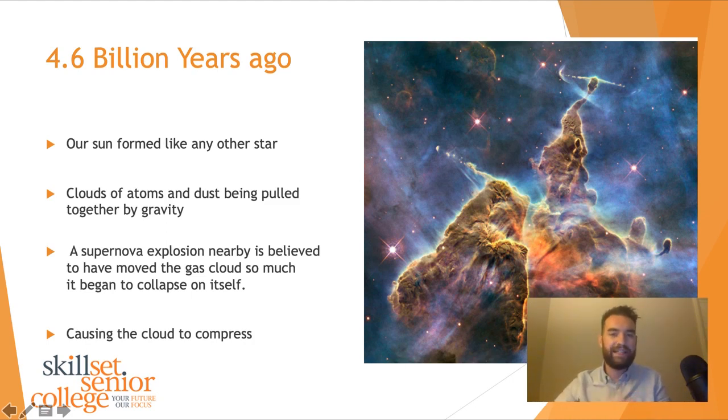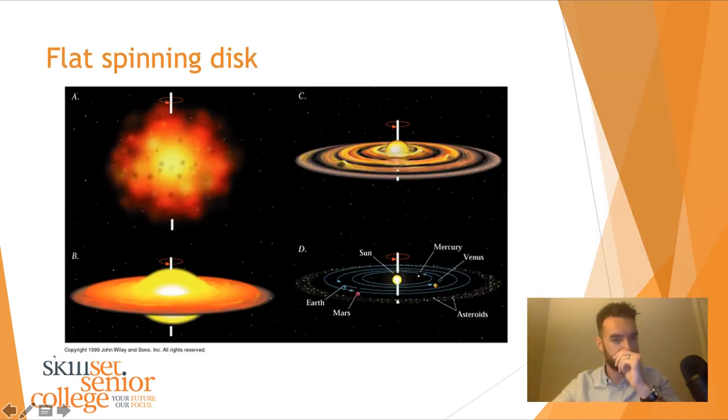This caused the cloud to compress. I talked about this spinning disk. It has a special name. If we look at this little diagram here, we have A, B, C and D. A is our dust clouds. We then get the supernova explosion, the compression of the cloud into B. You can see this proto sun forming in the middle. Then C, we do have the formation of our sun. But you can see the rings around the sun. We still have this flat spinning disk. These planets started to form through accretion. Eventually D, we have our solar system that we see today.